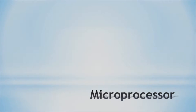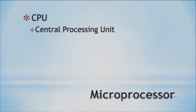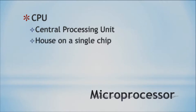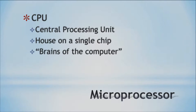The first thing we're going to talk about is the microprocessor, and this is your CPU — your central processing unit. Most people just call it a CPU. The CPU is housed on a single chip — it's only one chip within your entire computer. You can also think of the CPU as the brains of your computer. It's what controls everything and makes everything work for you.